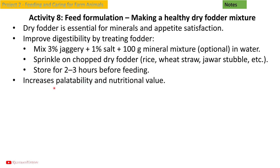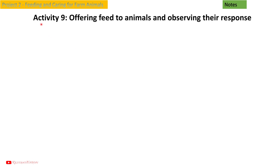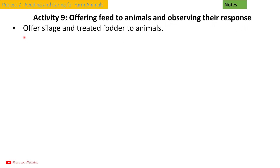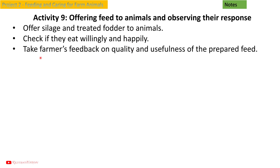Activity 9: Offering feed to animals and observing their response. Offer silage and treated fodder to animals. Check if they eat willingly and happily. Take the farmer's feedback on the quality and usefulness of the prepared feed.